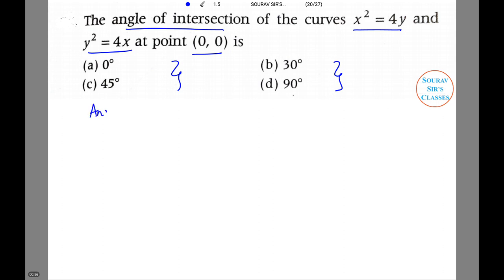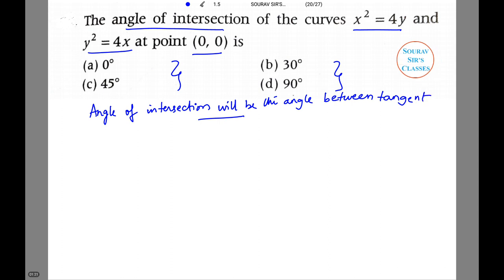The angle of intersection will be the angle between tangents at (0,0). Now we will pick the two equations individually and then compute the slope.